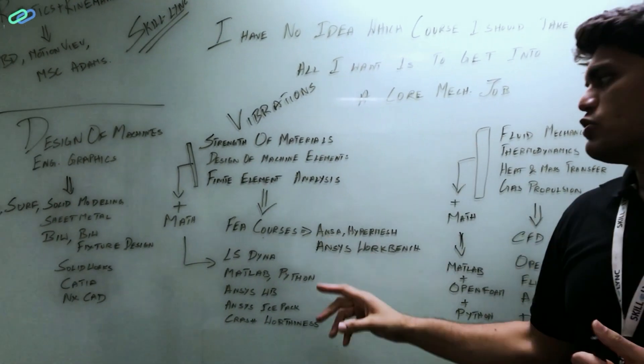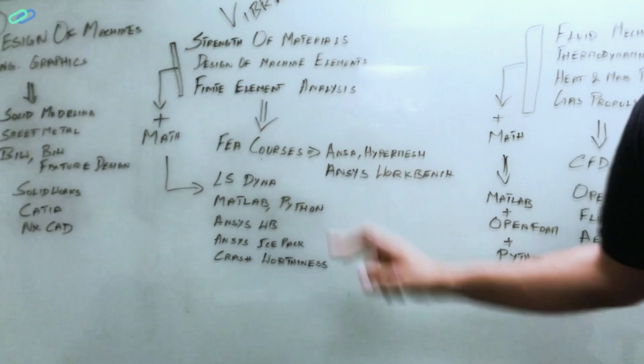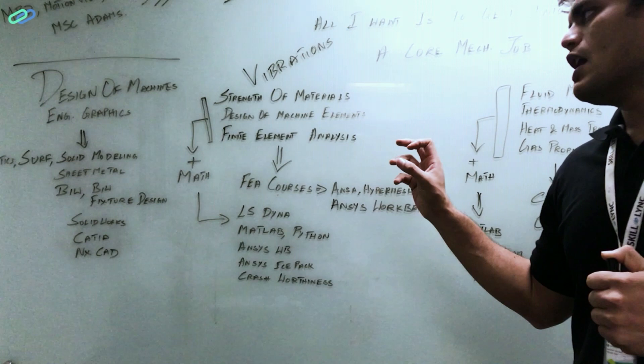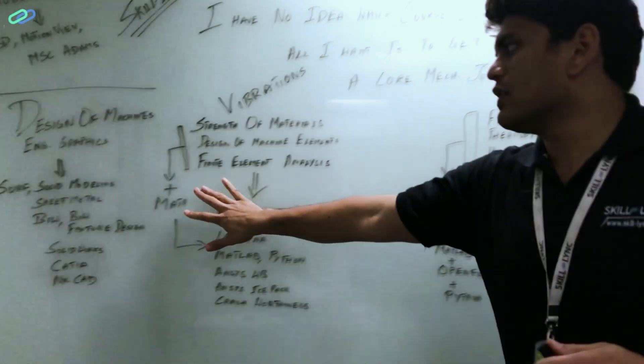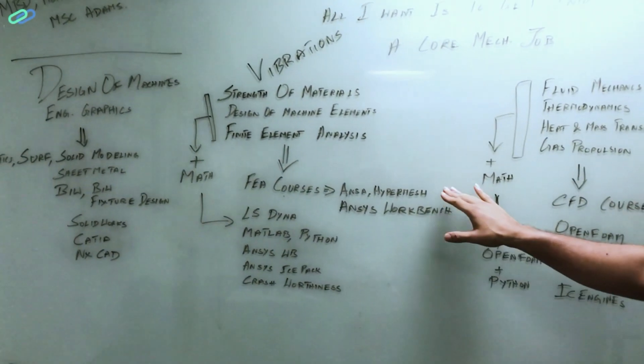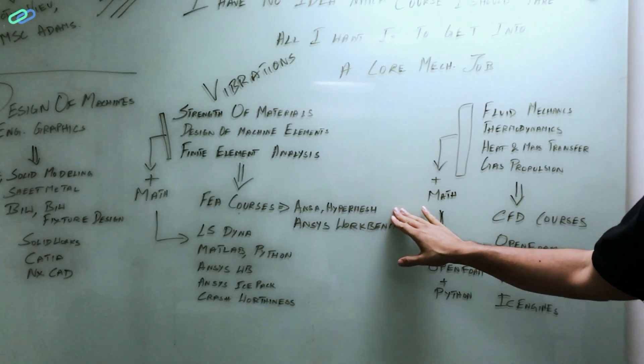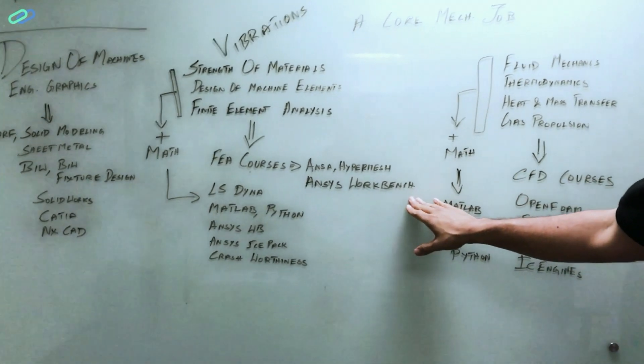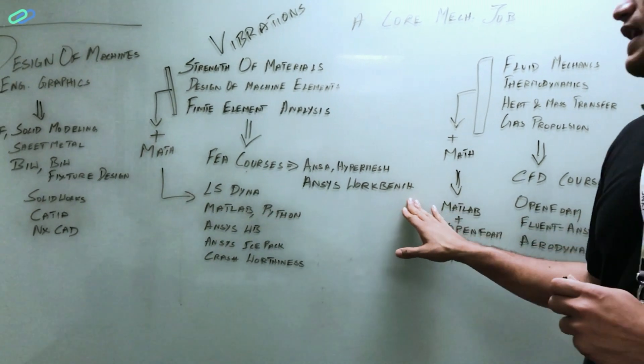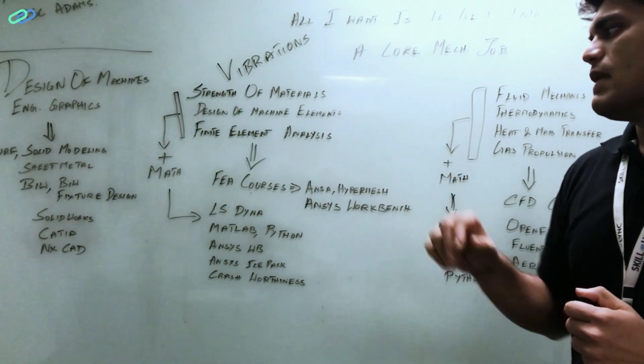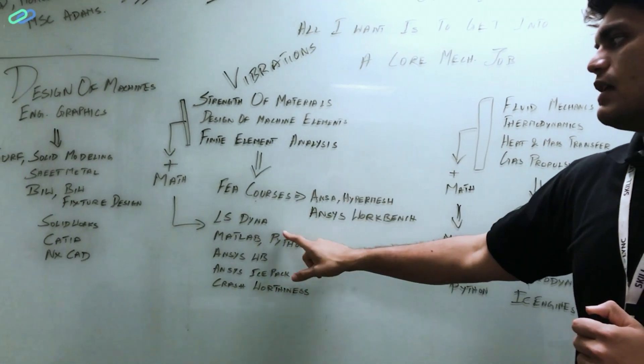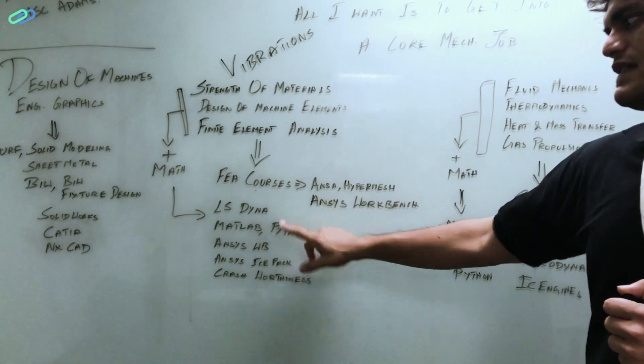So these three plus vibrations, then the courses that you should definitely take are based upon FEA. FEA is the domain that you should look into. So if you are really good at this, but not good at math, then you can take pre-processing using ANSA, pre-processing using HyperMesh, or introduction to FEA using ANSYS Workbench.